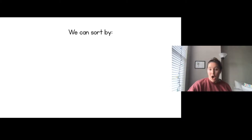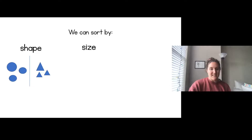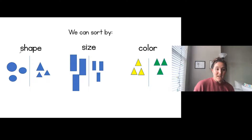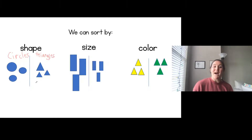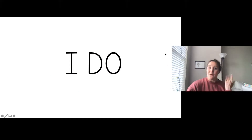We can sort objects or pictures by shape — for example, circles and triangles. We can also sort by size, meaning big and small. Or we can sort by color, like yellow and green. Here are circles and triangles sorted by shape, big and small objects sorted by size, and yellow and green sorted by color.